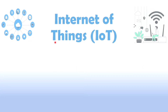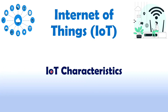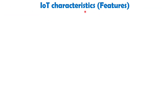Hey friends, welcome to Engineering Funda family. In this video we are about to see a very important topic, that is characteristics of IoT. The characteristics of IoT refers to the distinctive features or attributes that are commonly associated with entire IoT ecosystems. These characteristics outline the key aspects and capabilities of IoT devices and networks.